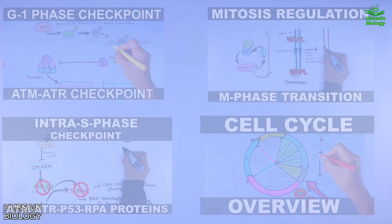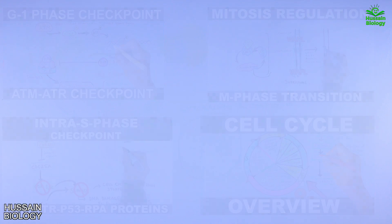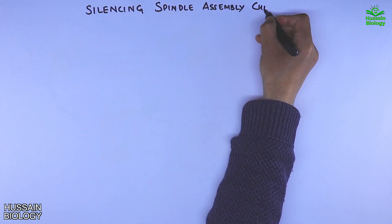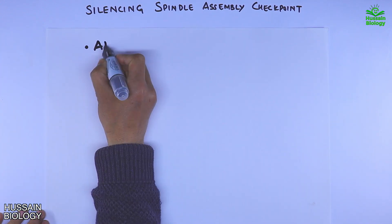In this series of videos we have been discussing about the cell cycle. In the previous video we discussed about the spindle assembly checkpoint — if you want to watch that video first, the link is in the description. Now in this video we'll be discussing about the silencing of the spindle assembly checkpoint.